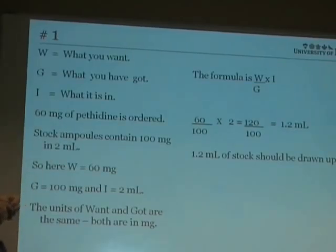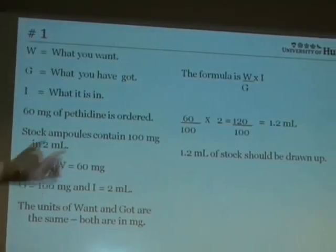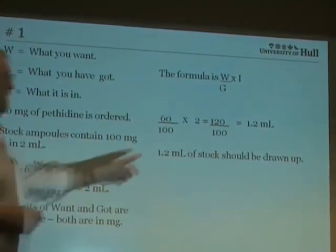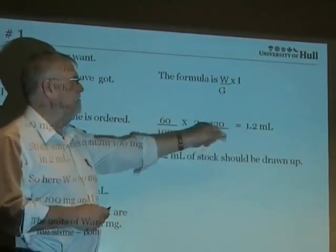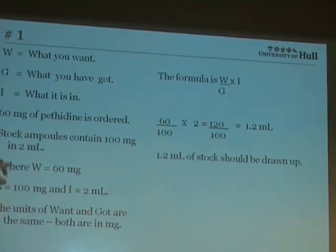If I substitute into that formula the numbers that I've got here, W is 60, G is 100 and I is 2. 2 times 60 is 120. 120 divided by 100 is 1.2. The units are always the same as those of in. In this case, this is milliliters. So we would draw up 1.2 milliliters of stock.